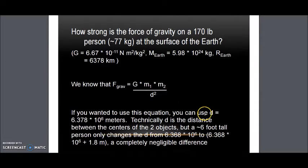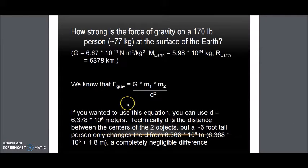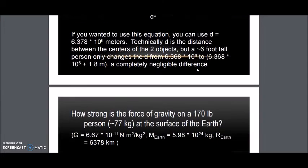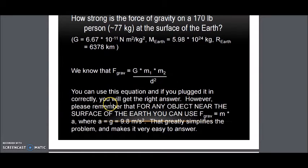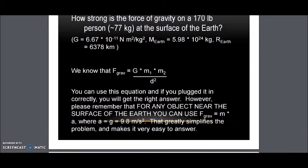If you wanted to use the equation, you can use D equals 6.378 to the power of 10 to the power of 6. Technically D is the distance between the centers of the two objects, but a 6 foot tall person only changes the distance from 6.368 times the power of 6 to 6.368 times the power of 6 plus 1.8 meters. A completely negligible difference. So this is near the surface of the earth. So you can use this equation and if you plugged it in correctly you would get the right answer. However, please remember that for any object near the surface of the earth, you can use F equals mass time acceleration, where A equals G equals 9.8 meters a second squared. That greatly simplifies the problem and makes it very easy to answer.